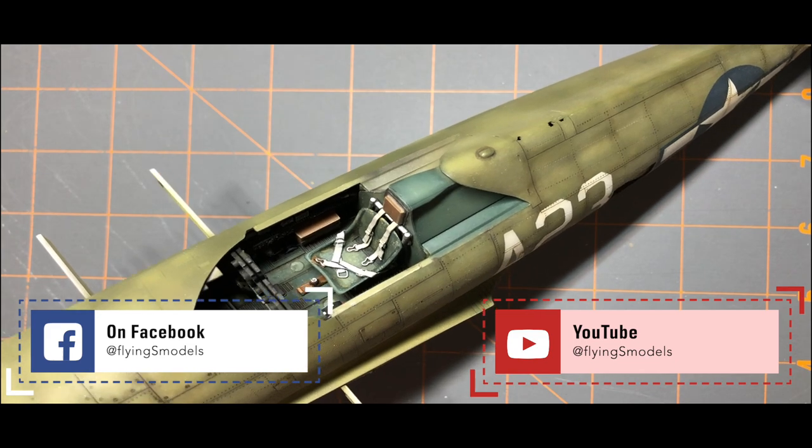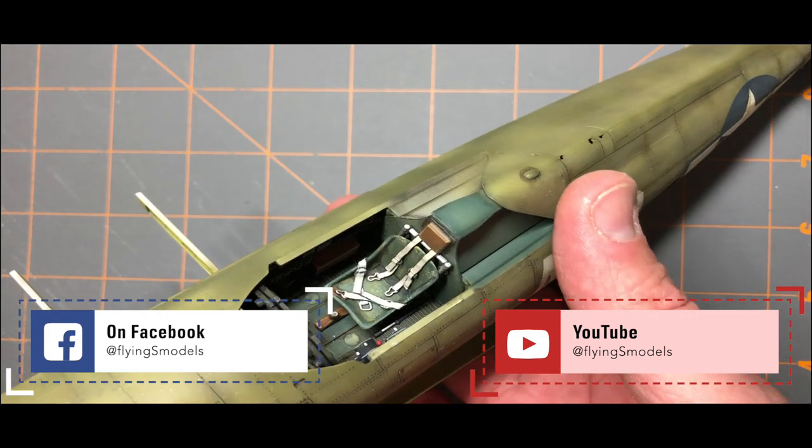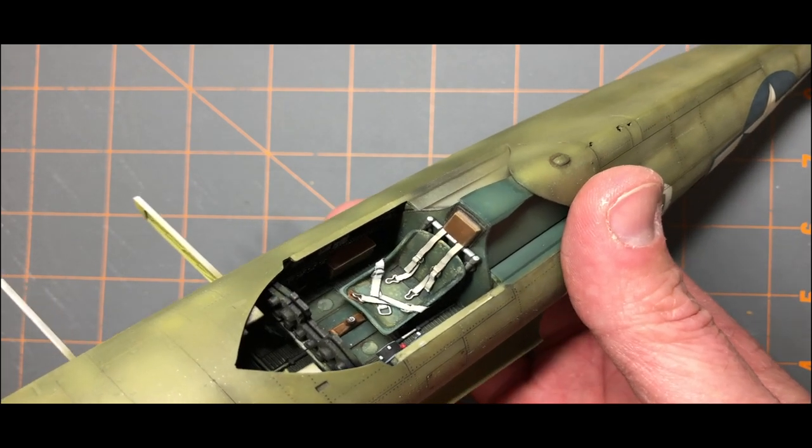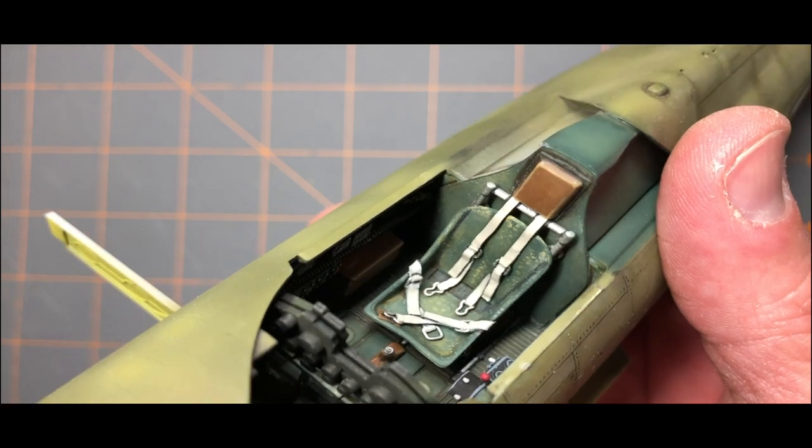I'm going to take a little time tonight to show you about making seat belts for model aircraft using lead foil and wire. Here's an example of a finished product that can be made.